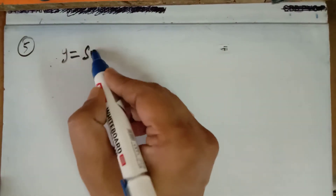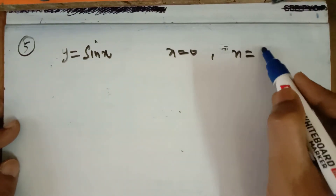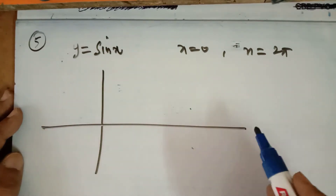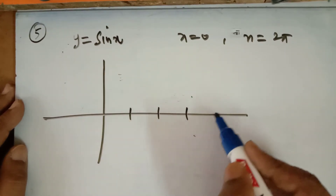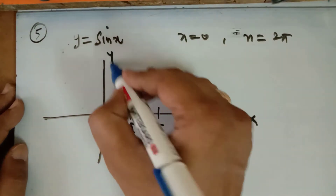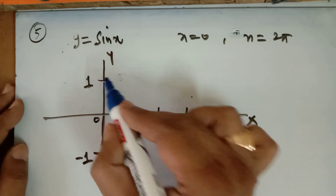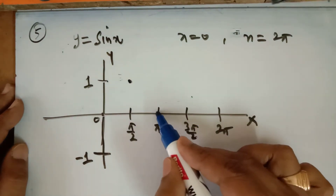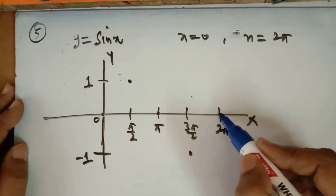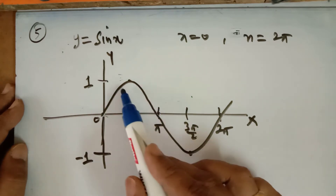In question number 5 of the miscellaneous exercise, you have to find the area bounded by the curve y = sin x from x = 0 to x = 2π. The sketch of sin x is well known: at 0 the value is 0, at π/2 it is 1, at π it is 0, at 3π/2 it is −1, and at 2π it is 0. You need to find the total area enclosed between this curve and the x-axis from 0 to 2π.